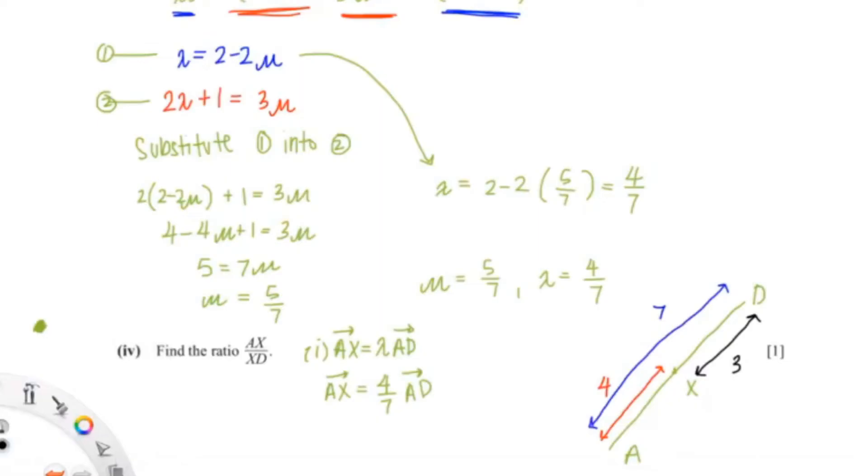So the ratio is 4 over 3 or 4 to 3. So AX to XD, AX is 4 and XD is 3. Or you could write it as a fraction the way they've asked. Over here, so that is 4 over 3.